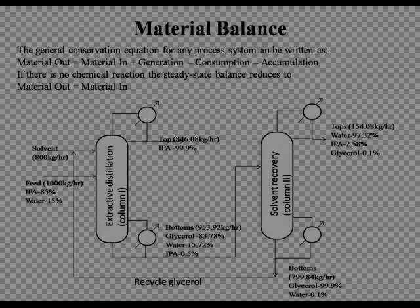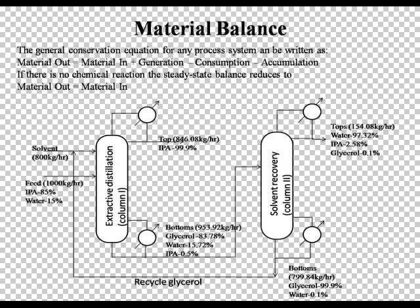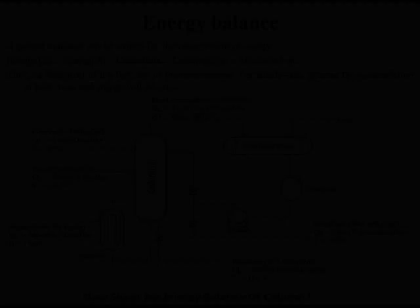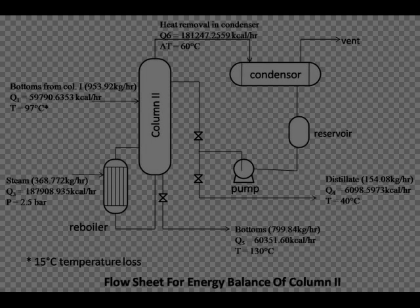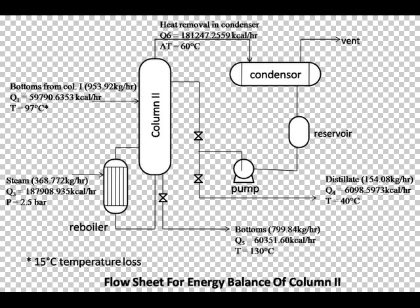Material balance: Since it is a steady-state process with no chemical reaction, the general energy balance equation used is: energy out equals energy in. Since it is a steady-state process, the accumulation becomes zero. The energy balance for column 2 was also calculated, and the steam required was found to be 368.7 kg per hour.